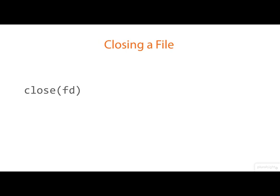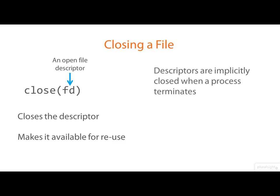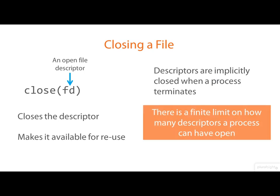Once you're finished with a descriptor you should call close on it, specifying just the open file descriptor. This closes the descriptor and makes it available for reuse. Descriptors are implicitly closed when a process terminates, but closing them explicitly is good practice. It's also essential in a long-running program like a server or a shell, because there is a finite limit on how many descriptors a process can have open, and you will eventually run out.